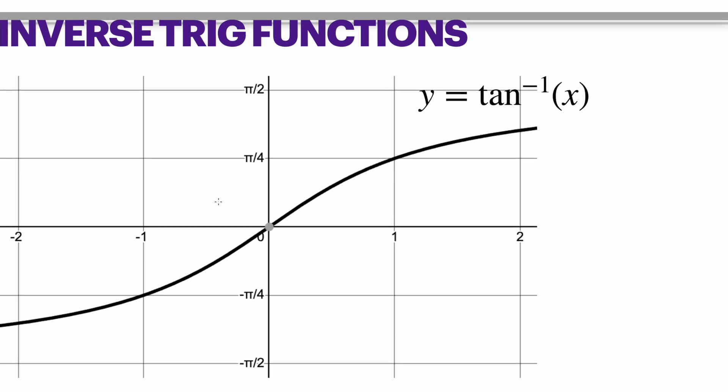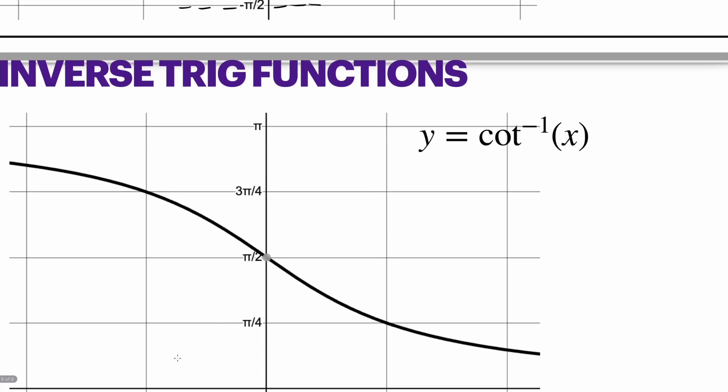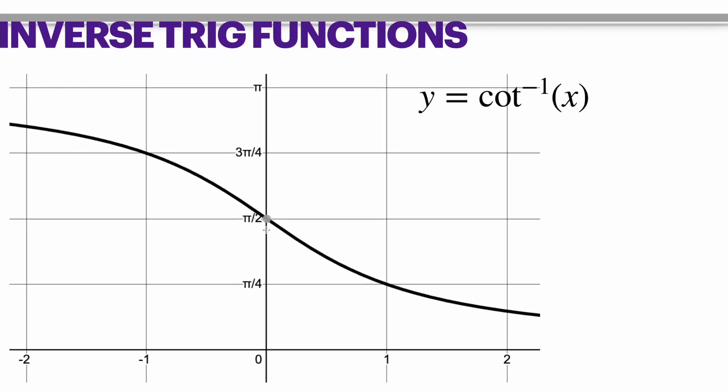Tangent ends up looking almost kind of like a cube root. And again, it will actually stop eventually at π/2 and negative π/2 as well. Cotangent does the same thing. It looks like tangent, but again, it's in reverse. It's reflected across the line y equals x.